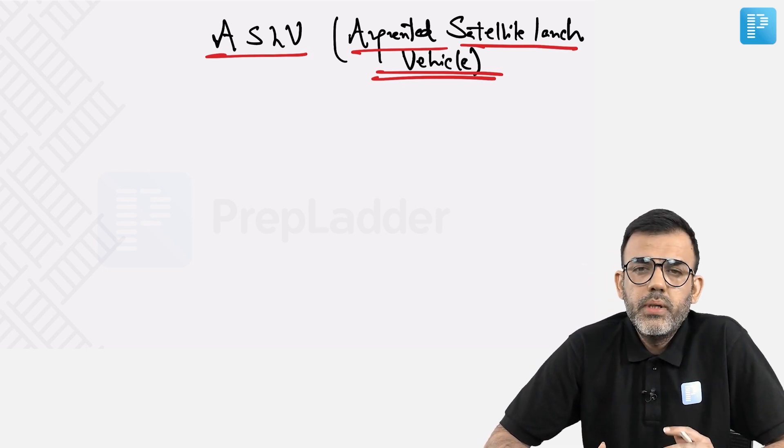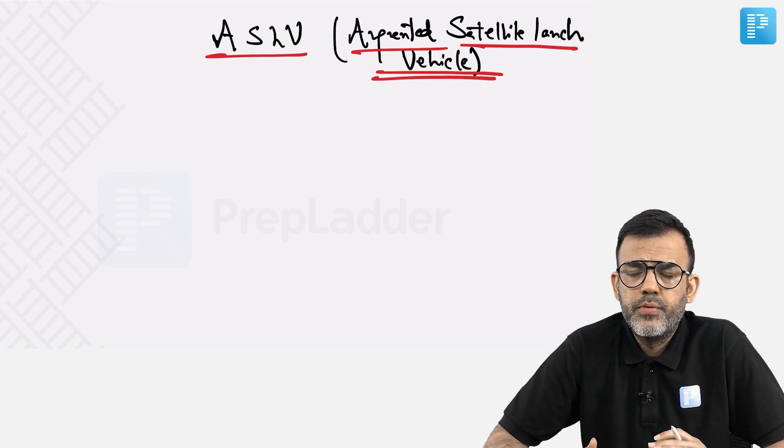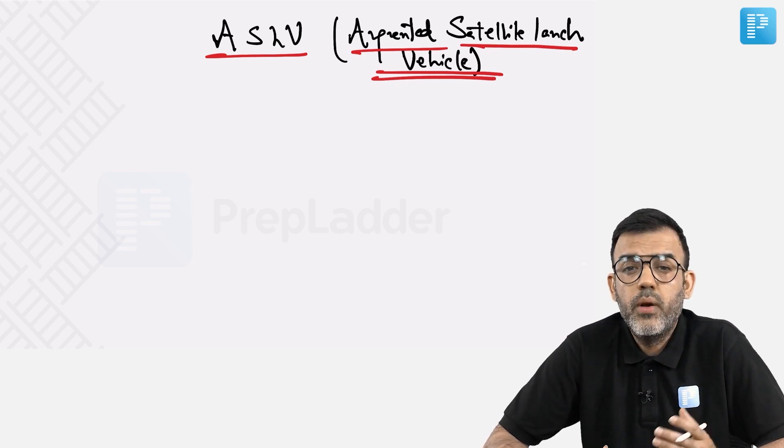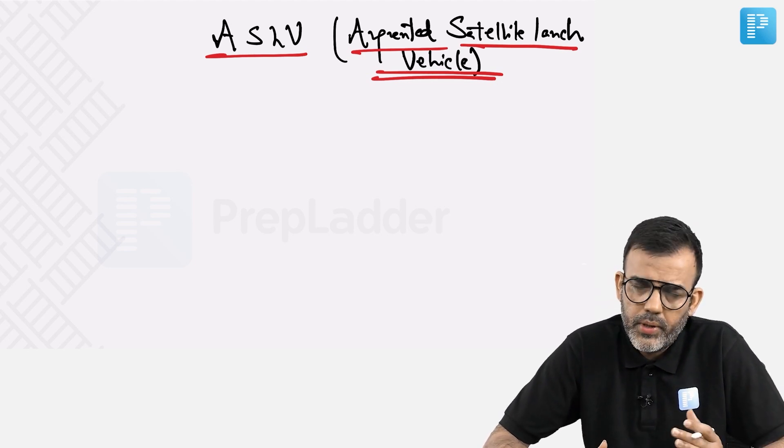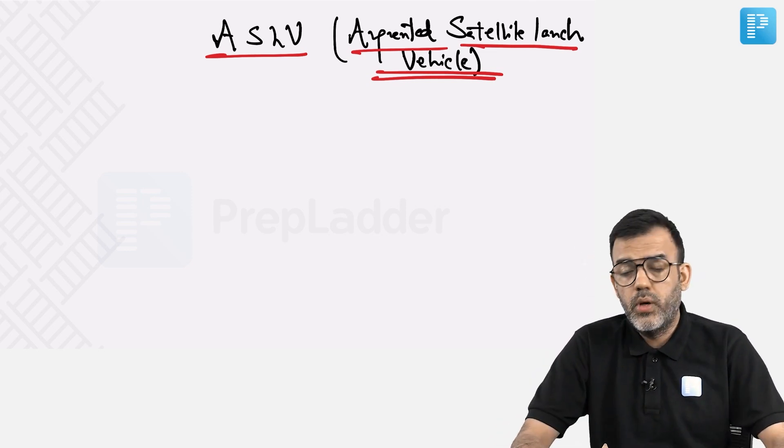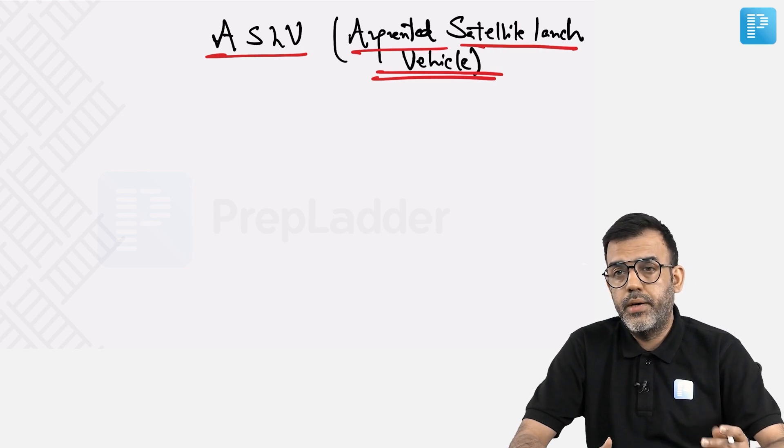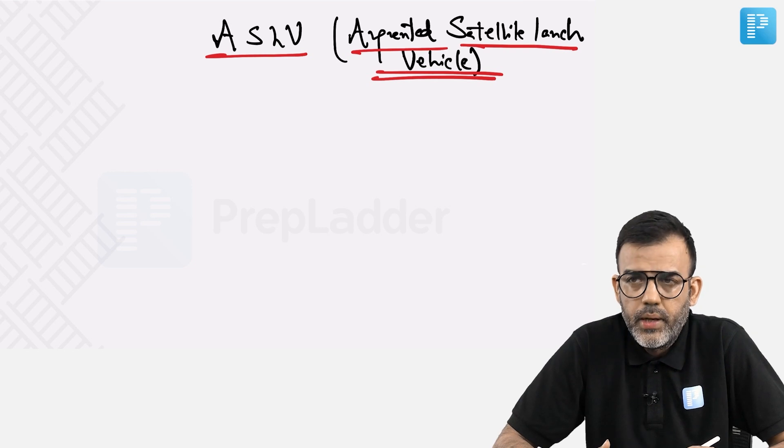Again, the prominent things about any launch vehicle are how many stages, what kind of fuel composition, how high it can go, and with how much payload it can carry. If there is any particular technological innovation being put up, that is also something we should be able to understand. This ASLV, Augmented Satellite Launch Vehicle, basically...